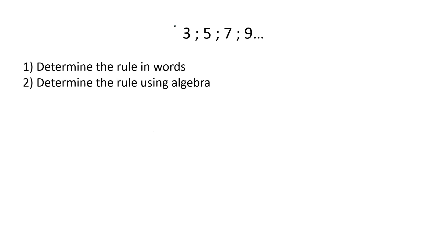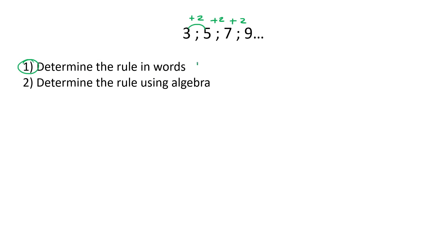So here we have a pattern. We can see that we're adding two each time to go from the next to the next. So the first question says determine the rule in words — you could just say: add two. That's all you need to say.